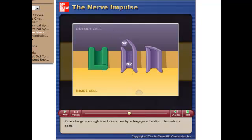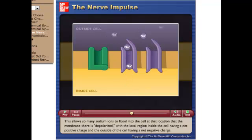If the change is enough, it will cause nearby voltage-gated sodium channels to open. This allows so many sodium ions to flood into the cell at that location that the membrane there is depolarized.